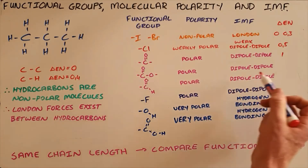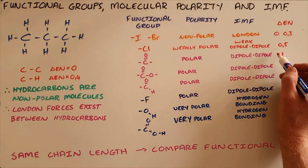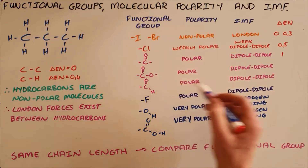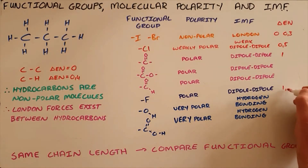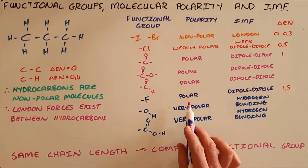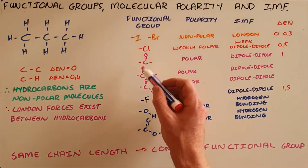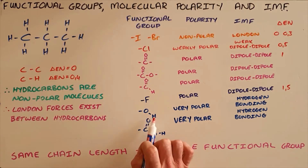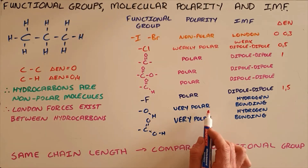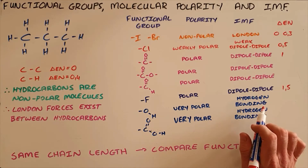Next comes the ester group, which is also polar with dipole-dipole forces, followed by the formyl group of aldehydes, which is also polar giving rise to dipole-dipole forces. It is important to note that these are arranged in order of increasing polarity but are all very similar in polarity. The next big increase is the fluoro group, which has an electronegativity difference of 1.5, making it a polar bond and a polar molecule with stronger dipole-dipole intermolecular forces than those containing the carbon-oxygen double bond. Second to last is the hydroxyl group of alcohols, an oxygen bonded to a hydrogen, which is a very polar group resulting in not only dipole-dipole forces but hydrogen bonding intermolecular forces, making those very strong.